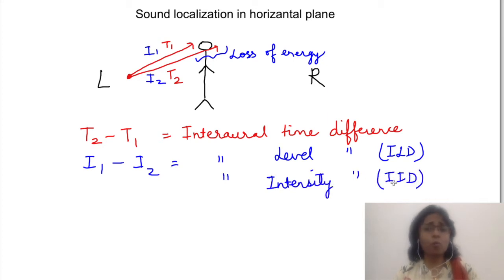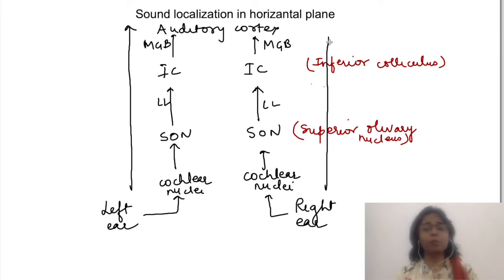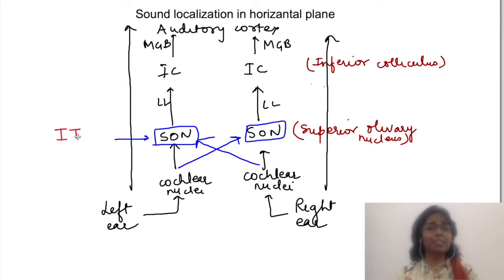The information from both ears will travel along its pathway to reach the cortex. In the pathway, at the level of the superior olivary complex, there is a crossing over of information. So each superior olivary complex receives information from both ears, and here we have certain connections to detect the time difference and intensity differences.